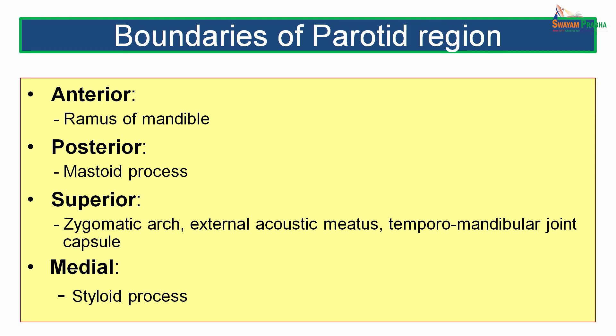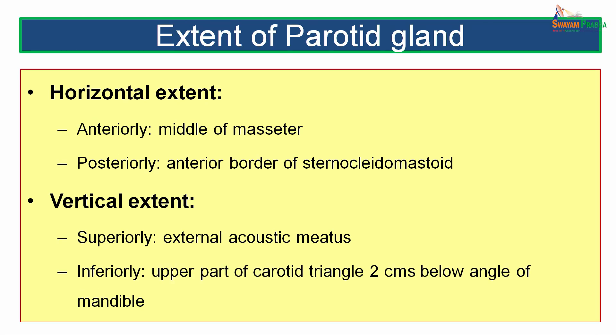Let us see the boundaries of the parotid region. The parotid region anteriorly extends up to the ramus of mandible. Posteriorly, it extends up to the mastoid process. Superiorly, it is limited by the zygomatic arch, the external acoustic meatus and the capsule of the temporomandibular joint. Medially, it extends up to the styloid process of the temporal bone. For horizontal extent, anteriorly the gland extends up to the middle of the masseter muscle, while posteriorly it extends up to the anterior border of the sternocleidomastoid muscle.